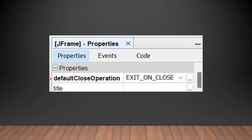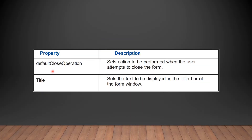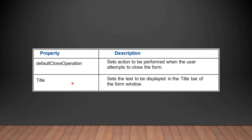We will be discussing the properties of JFrame: defaultCloseOperation and title, as given in your book. DefaultCloseOperation sets the action to be performed when the user attempts to close the form. Whenever we select it, it will set the action to close the form — the action performed during closing is managed by this property. Title means the heading; it sets the text to be displayed in the title bar of the form window. The title property decides what will be displayed in the title bar.